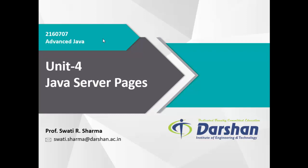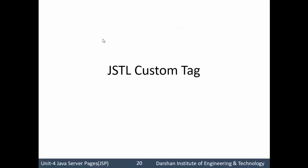Hello students. Today I am going to take a lecture on JSTL custom tag. We have already seen the JSTL library which contains several libraries such as core tag library, function library, internationalization tag library, SQL library, and XML library. All these libraries were created by developers and we just need to add them in our code and use them. But now if we want to create our own tags and include our own library, the solution is to use JSTL custom tag library.